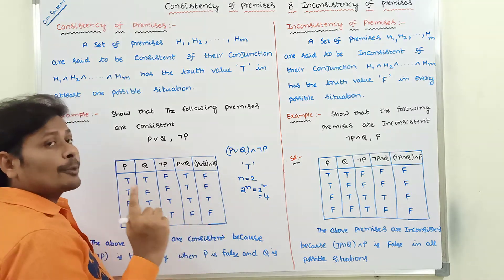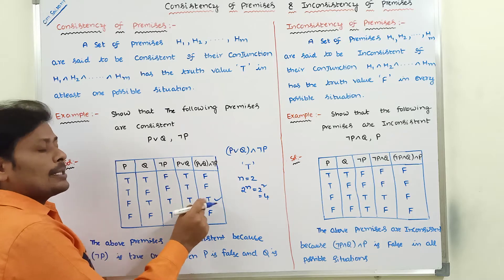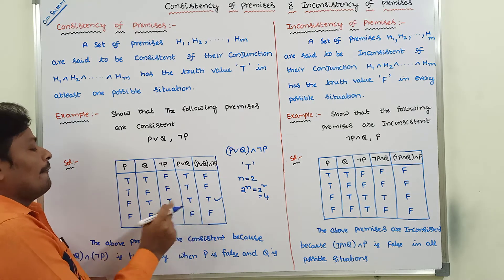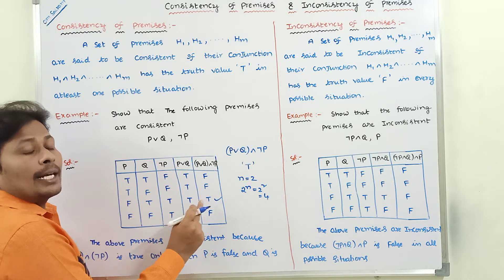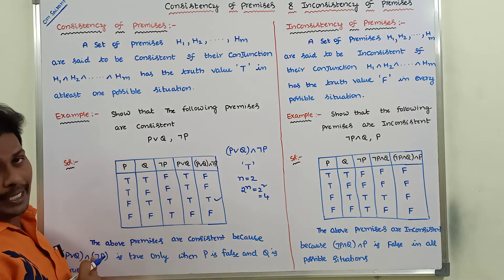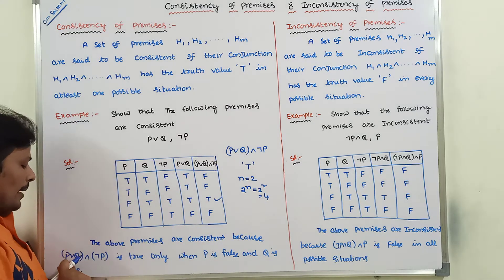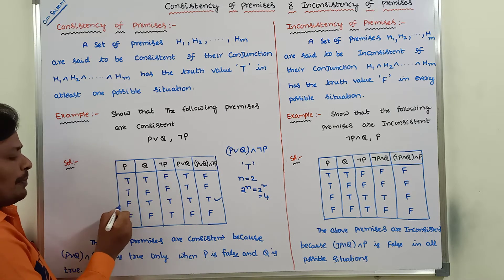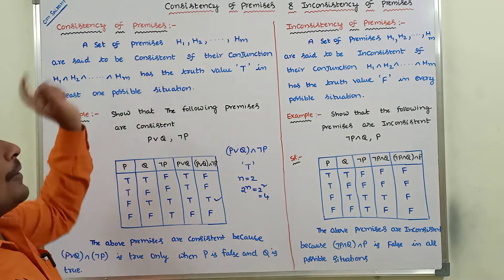In the conjunction of the given premises, at least one possible situation contains the truth value true. When P is false and Q is true, the conjunction of the premises contains the truth value true. Hence we can say that these given premises P∨Q and ¬P are consistent, because their conjunction is true only when P is false and Q is true.